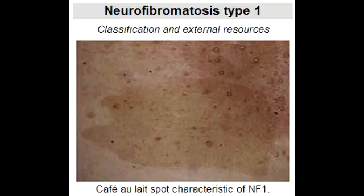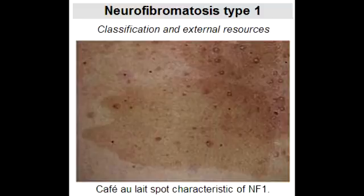What are the classic clinical presentations seen with neurofibromatosis type 1? The classic clinical presentations of neurofibromatosis type 1 are café-au-lait spots, Lisch nodules — which are pigmented iris hamartomas — neurofibromas in the skin, optic gliomas, and pheochromocytomas.